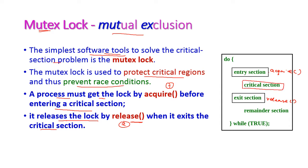While entering the critical section, the process should acquire the lock before entering using the acquire function. Once the critical section has been executed, after that the process should release the lock by using the release function.